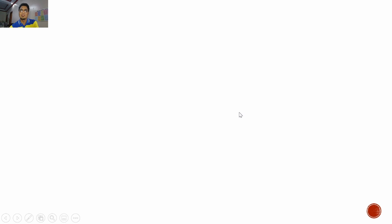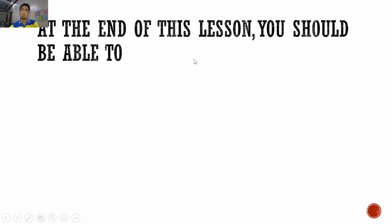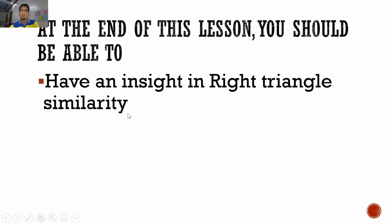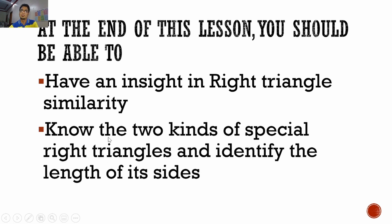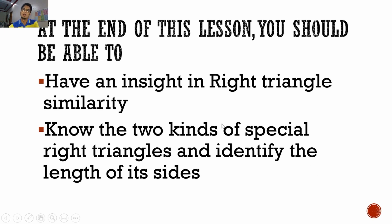As always, we have our aims. At the end of this lesson, you should be able to: first, have an insight in right triangle similarity — how can we say that two right triangles can be considered similar? And second, know the two kinds of special right triangles. Aside from knowing that, we have to identify the length of each side. When given one part of the sides of a special right triangle, the remaining sides will be known to us.